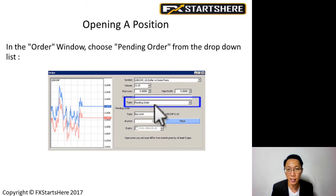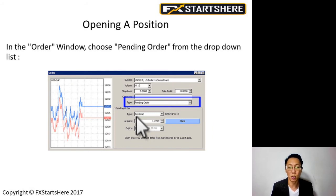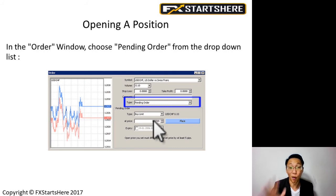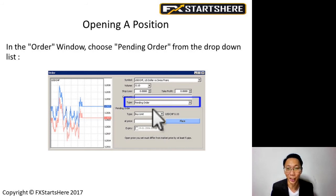If you choose Pending Order instead of Instant Execution, the menu changes. You can select Buy Limit, Sell Limit, Buy Stop, or Sell Stop. The technique I've taught is to use Buy Stop and Sell Stop. In the Price field you key in your entry price, and once the price reaches that level, the trade is automatically entered — so you don't have to sit in front of the screen waiting all day.